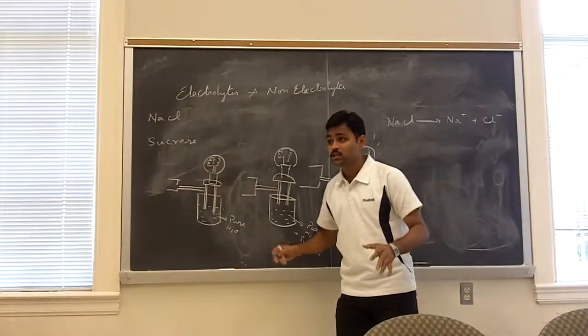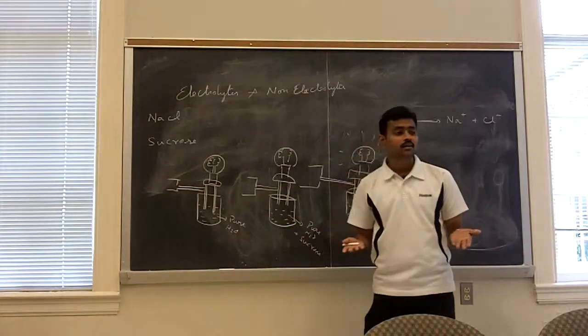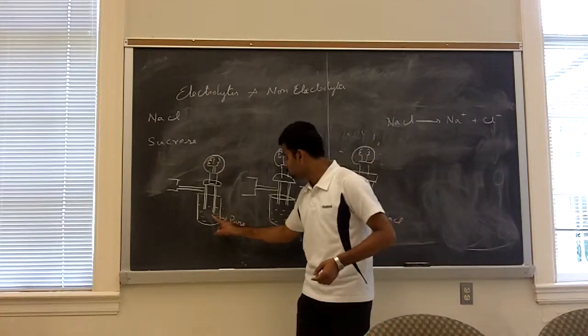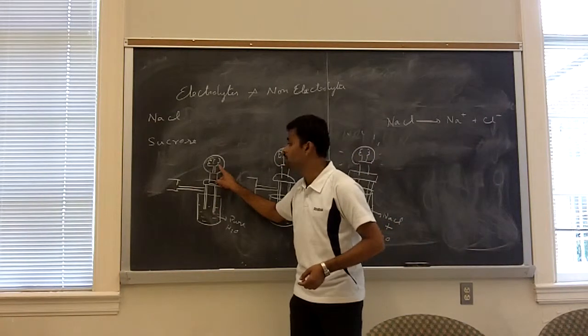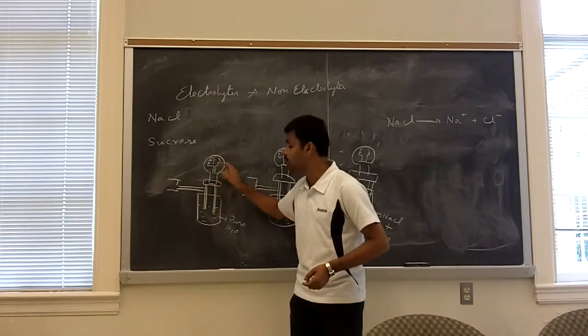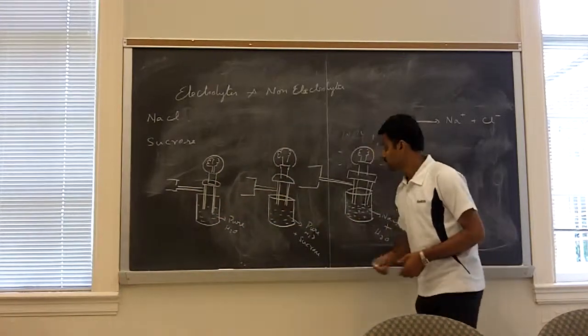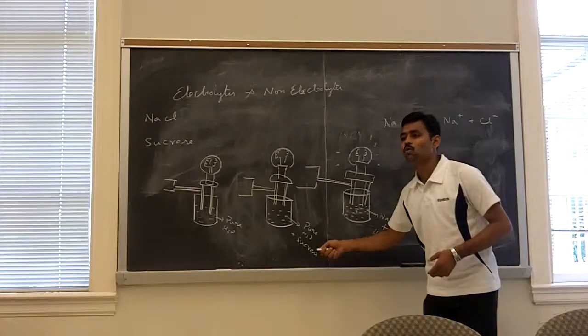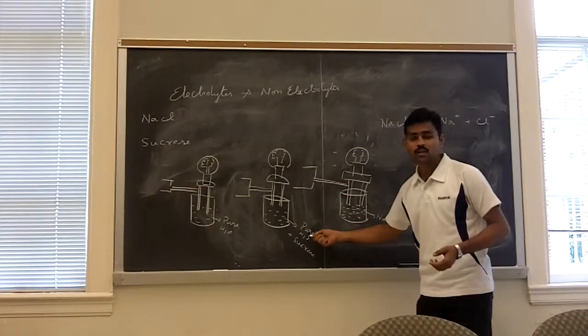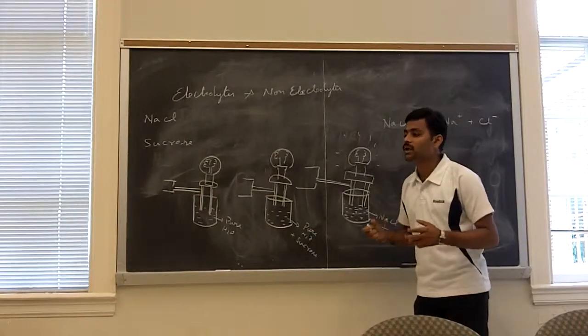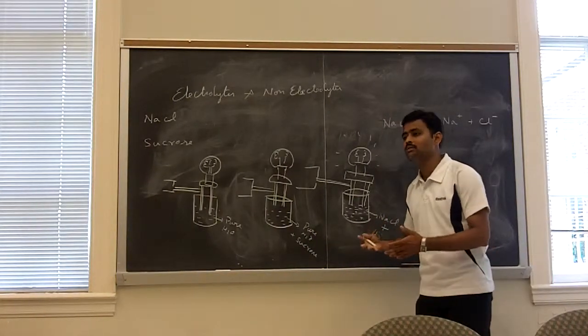So it does not dissociate. So you do not get charged ions. If you have charged ions, it would have crossed through the filament to the wire and the bulbs would have glown. But it has not. In the second case, sucrose is a covalent molecule. So it also does not produce any current carrying particles. Current carrying particles, I mean ions.